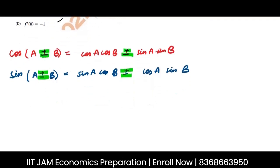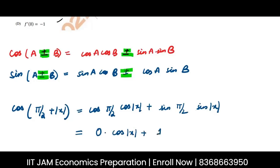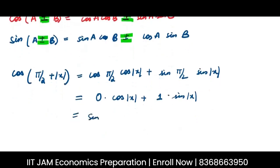Now let's talk about the function that we have. The numerator is cos(π/2 + |x|). Using the cosine addition formula, this becomes cos(π/2)·cos|x| − sin(π/2)·sin|x|. Since cos 90° = 0 and sin 90° = 1, this simplifies to sin|x|.